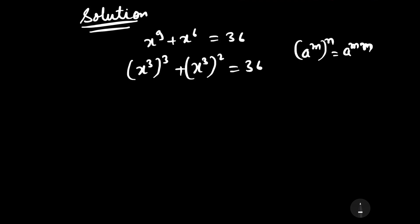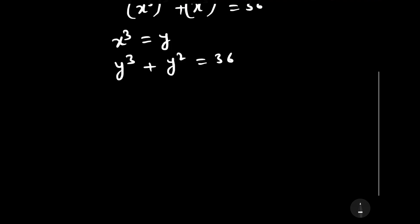Now let us consider x to the power 3 as y. Therefore we can write it as y cubed plus y squared minus 36 is equal to 0.